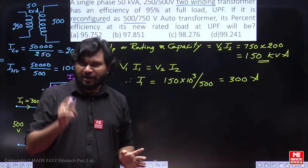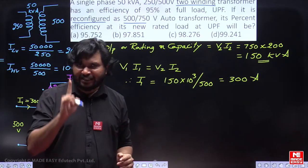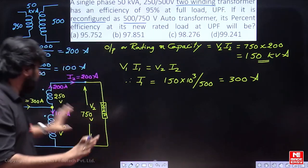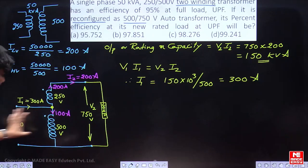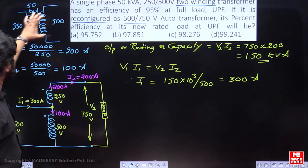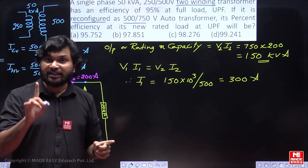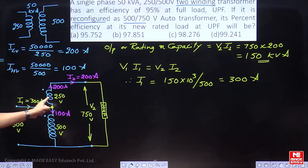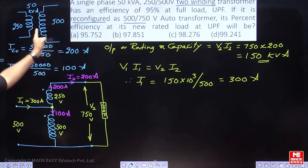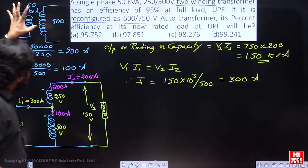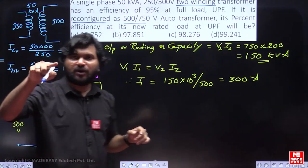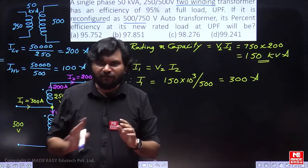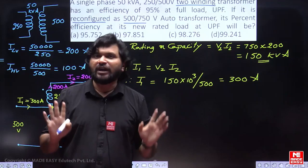Hope you understood. There are two losses in transformers: iron loss depends on voltage across the windings, which is the same (250 V and 500 V). Copper loss depends on current flowing in the windings, which is also the same (200 A and 100 A). So what is the loss when it was a two-winding transformer equals the loss when it is an auto transformer. We will continue with the calculation.